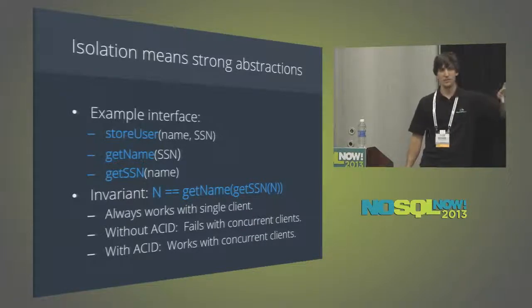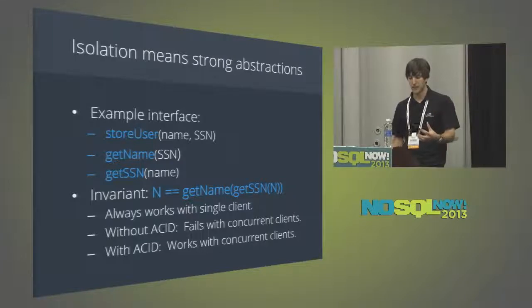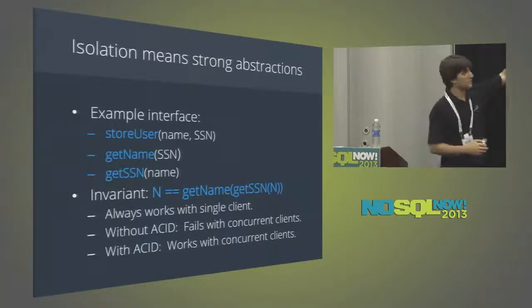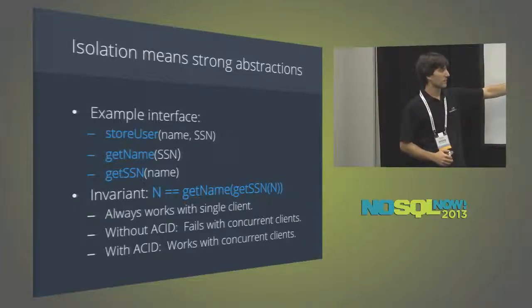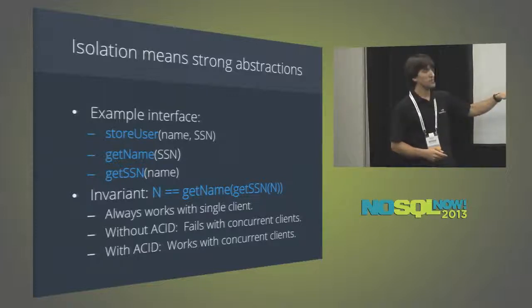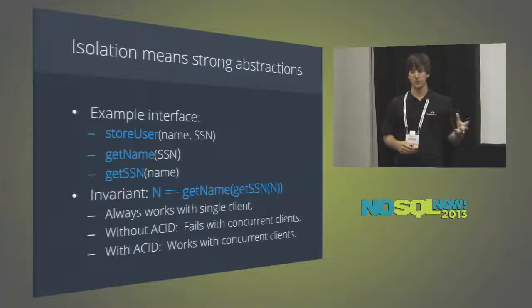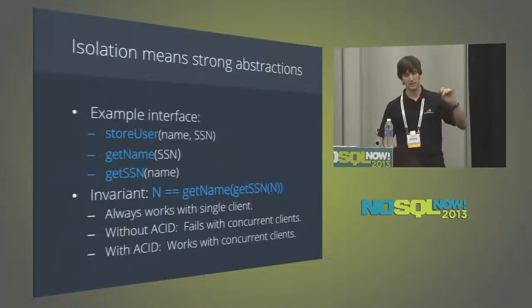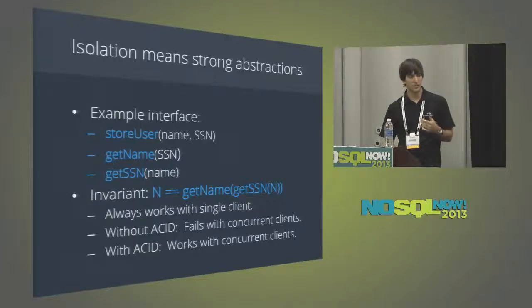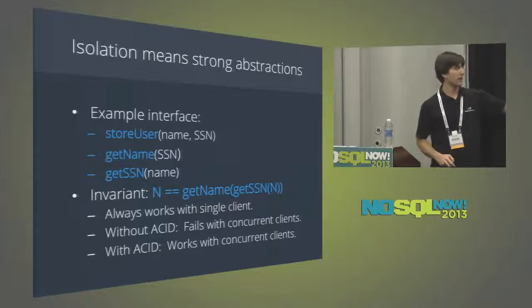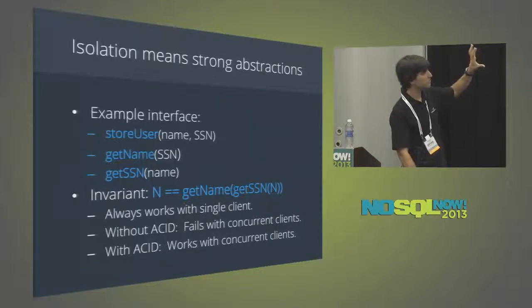Isolation gives us the ability to build strong abstractions. For example, you can store a user in a database — put in their name and their social — and also get their name and get their social. It would be a wonderful invariant if, given a name, you get the social and then get back the name. When you build this as a toy project in a weekend with a single client, that invariant always works. But without isolation, without ACID, when you try to run this with concurrent clients, this invariant doesn't hold. ACID brings back the ability for this invariant to survive even with concurrent clients.